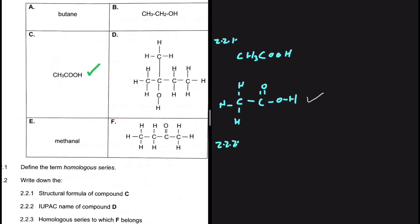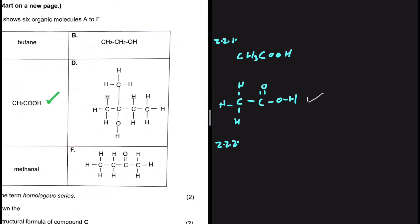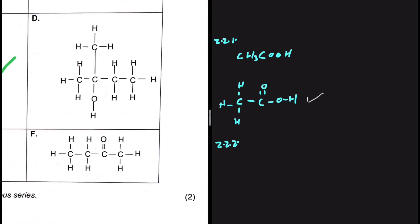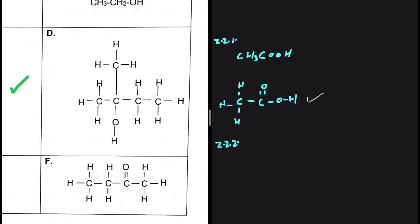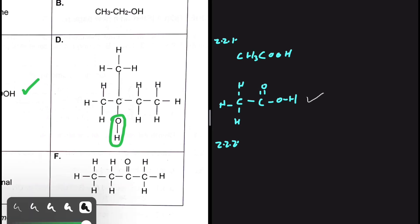For 2.2.2, we need the IUPAC name of compound D. The first thing we look for is a functional group. We have an OH group, so we know we are dealing with an alcohol.